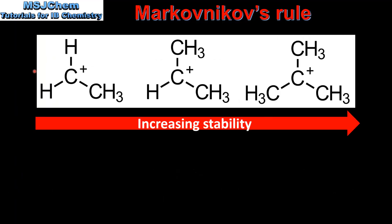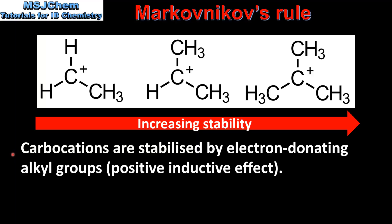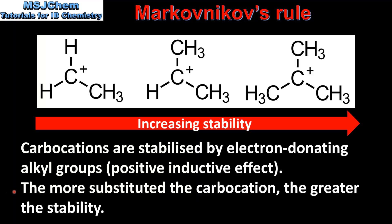Next we look at the stability of carbocations in more detail. In terms of stability, primary carbocations are the least stable and tertiary carbocations are the most stable, so from left to right we have increasing stability. Carbocations are stabilized by electron-donating alkyl groups. A primary carbocation has only 1 alkyl group, a secondary carbocation has 2 alkyl groups, and a tertiary carbocation has 3 alkyl groups. The positive charge on the carbon atom is stabilized by these alkyl groups; therefore the more alkyl groups, the greater the stability of the carbocation. This is known as the positive inductive effect. To summarize: the more substituted the carbocation, the greater the stability.